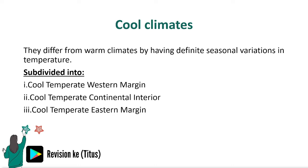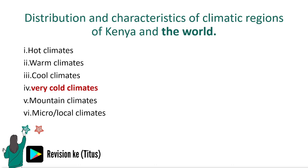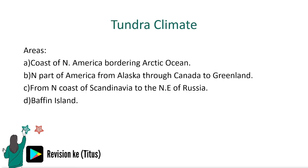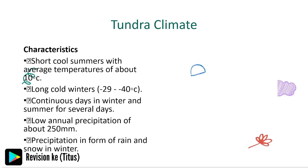The very cold climates, also known as polar desert climates or arctic and antarctic climates, are found beyond the Arctic Circle. They are classified into two: tundra and polar climates. The tundra climate is found along the coast of North America bordering the Arctic Ocean, the northern part of North America from Alaska through Canada to Greenland, the north coast of Scandinavia, and northeast Russia including the Baffin Island.